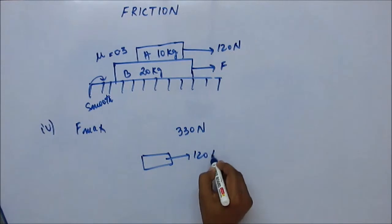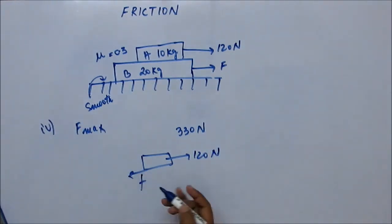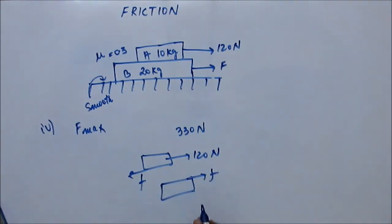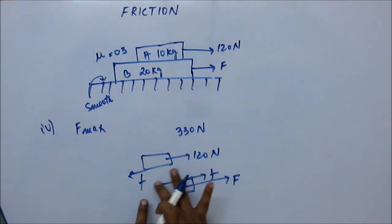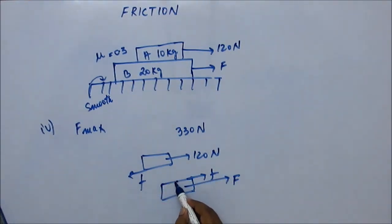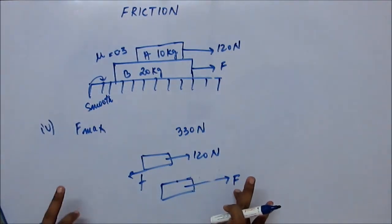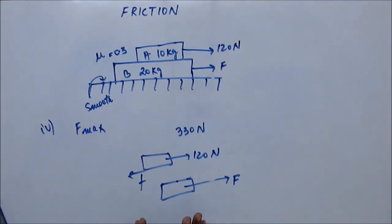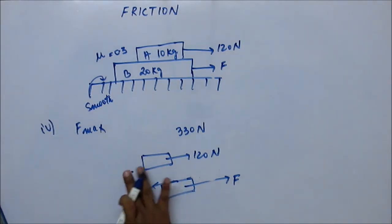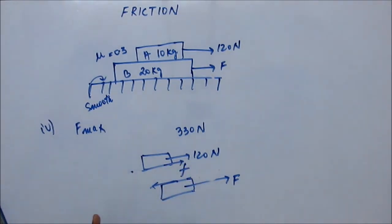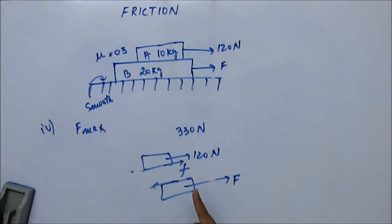Initially in the FBD, 120 N acted on A and friction was in the backward direction; for B, friction was in the forward direction. As you keep increasing force and B starts to slip beneath A, the friction force reverses direction. It decreases to 0 — as calculated, at F = 240 N friction is 0. Henceforth, friction increases in the reverse direction to limit B's acceleration and keep relative acceleration between A and B at zero.